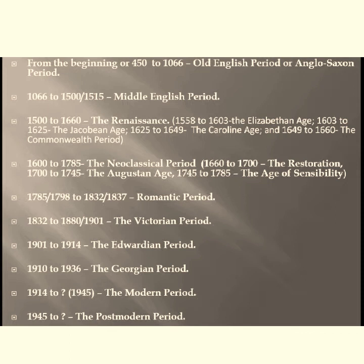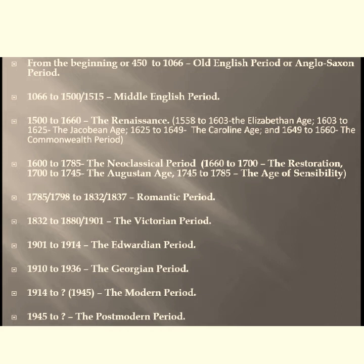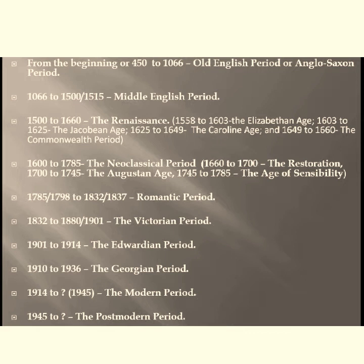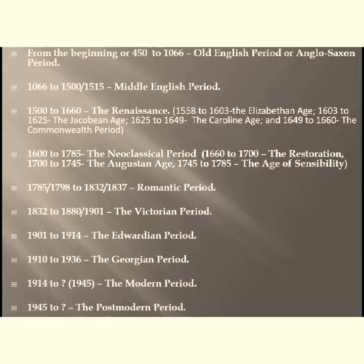Then we have the Neoclassical period, with a time span of 1660 to 1785, subdivided into three periods: the Restoration period (1660 to 1700), the Augustan age (1700 to 1745), and the Age of Sensibility (1745 to 1785). The Romantic period spans 1785 or 1798 to 1832 or 1837. The Victorian period spans 1832 to 1901. Then we have the Edwardian period (1901–1914), the Georgian period (1910–1936), the Modern period (1914 to approximately 1945), and the Postmodern period (1945 to approximately 1990).